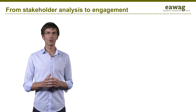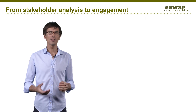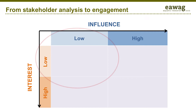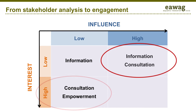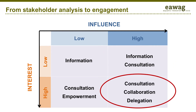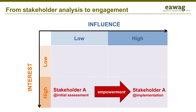In a simplified approach, we can try to identify appropriate participation levels based on the influence-interest matrix. The stakeholders with low interest and low influence are unlikely to be closely involved and just need to be kept informed. Those with a high interest but low influence, as is often the case for private service providers, need to be consulted and sometimes empowered. Those with a low interest but a high influence need to be informed or consulted — you want to make sure that they don't oppose your plans. Finally, the stakeholders with high interest and high influence usually need consultation, collaboration or even delegation at the end of the process. Note that the process is dynamic and iterative — a stakeholder group may gain influence if it is empowered. This could be the case with an organized group of pit emptiers.